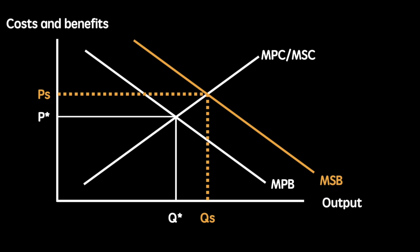To determine the welfare loss, we consider the points at which the marginal social benefit is greater than the marginal social cost from our original equilibrium of P star Q star. Since the marginal social benefit Y is greater than the marginal social cost X, more of this good should be produced. The welfare loss represents the sum of the remaining benefit of those additional units that are not being produced, represented by triangle XYZ. The socially optimum level of production is where the marginal social cost equals the marginal social benefit, which happens at PS QS.